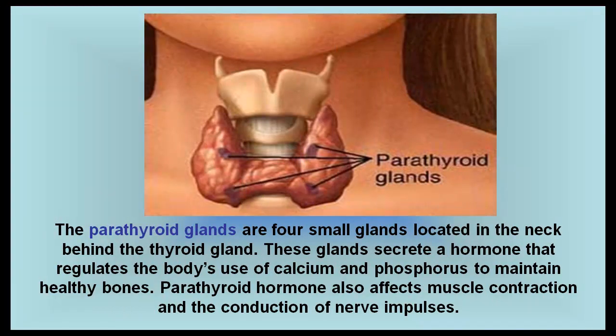The parathyroid glands are four small glands located in the neck behind the thyroid gland. These glands secrete a hormone that regulates the body's use of calcium and phosphorus to maintain healthy bones. Parathyroid hormone also affects muscle contraction and the conduction of nerve impulses.